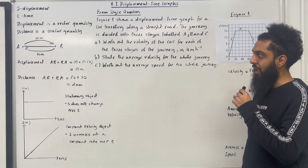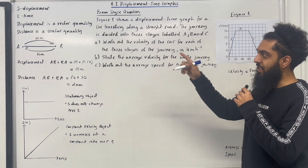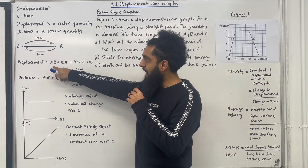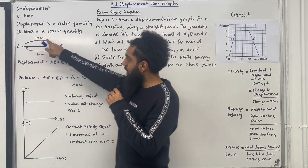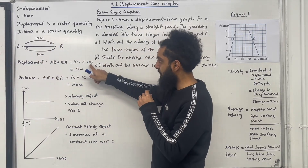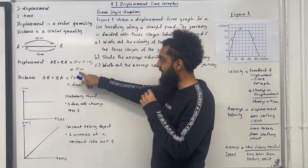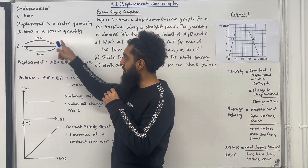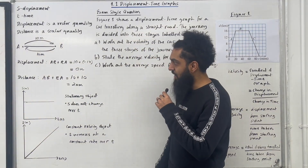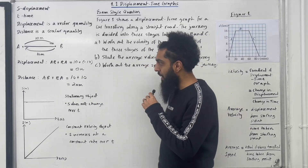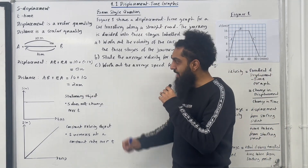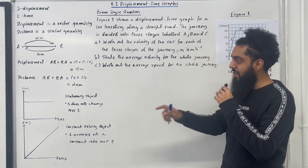Consider point A and point B. A to B is 10m and B to A is 10m. The displacement is given by AB plus BA, so we have 10m going forward, then 10m going backwards, which is minus 10. So 10 plus minus 10 is zero — the displacement from A to B and then back to A is 0m. Whereas the distance is given by 10 plus 10, because distance has a magnitude but no direction. So the distance travelled from A to B to A is 20m.